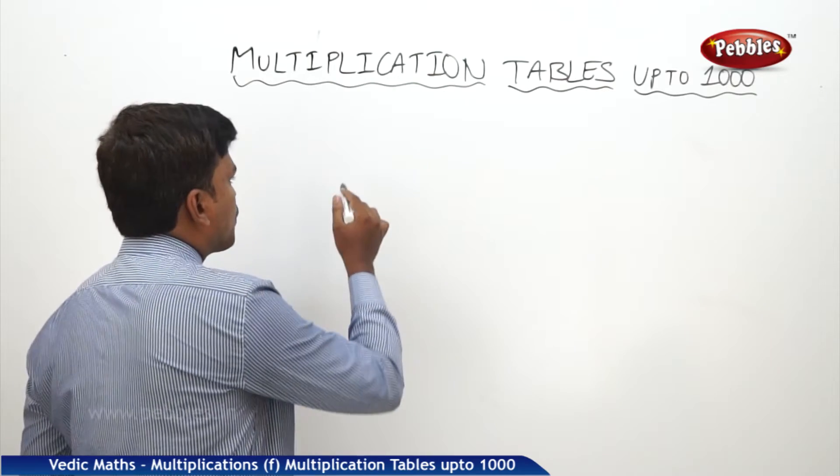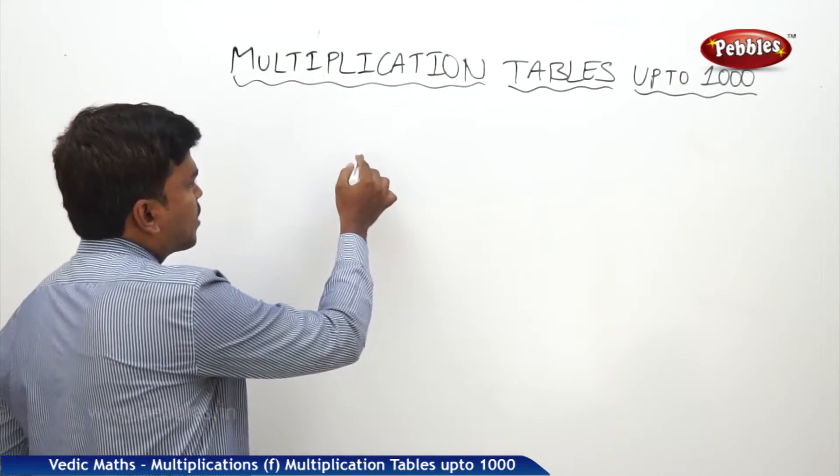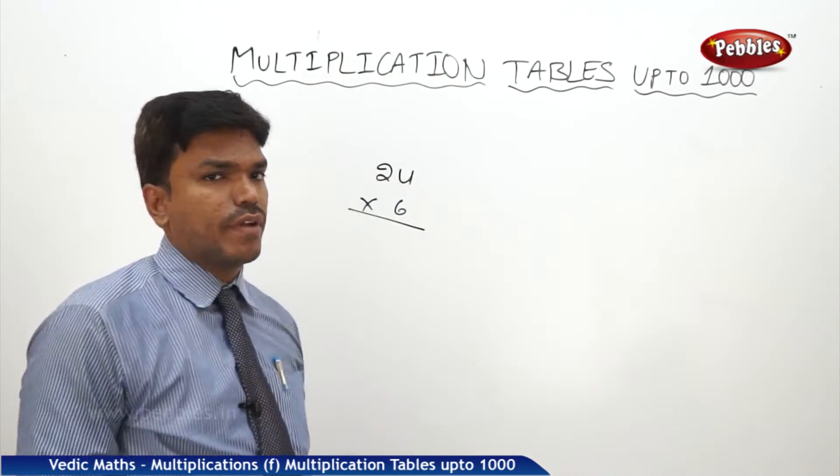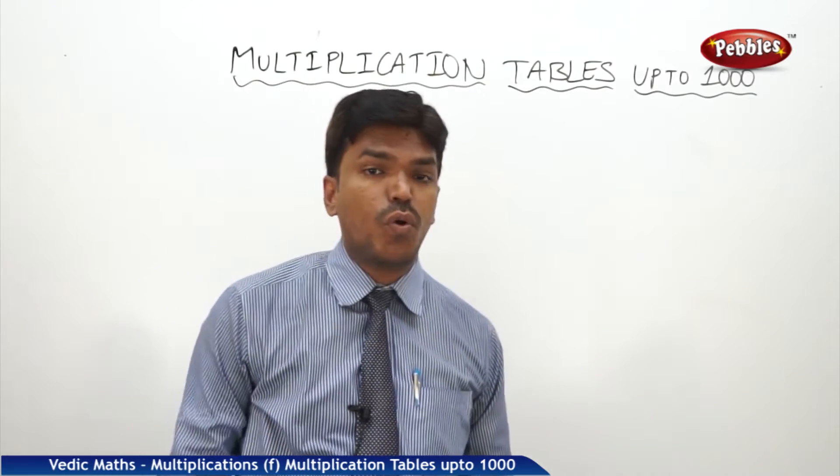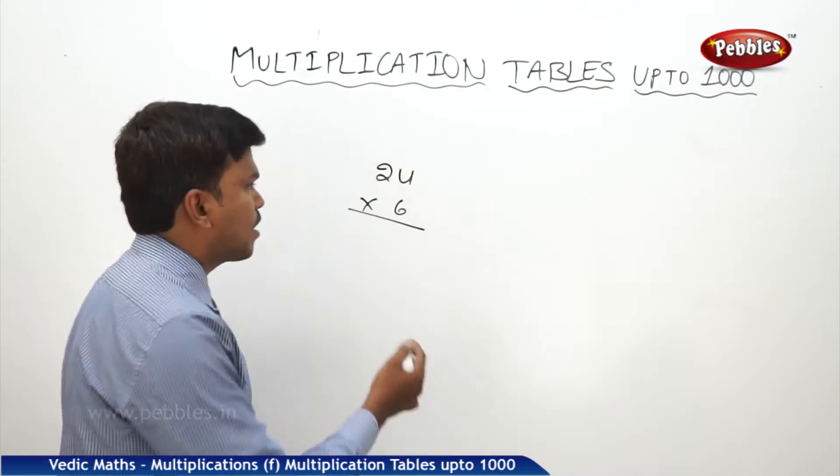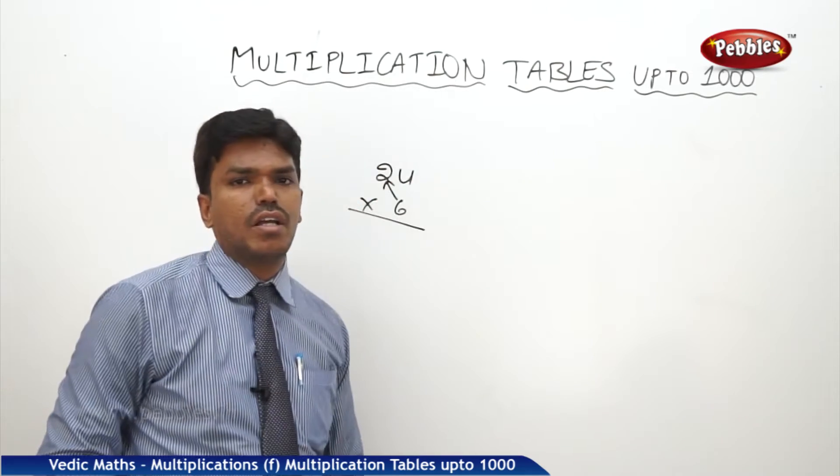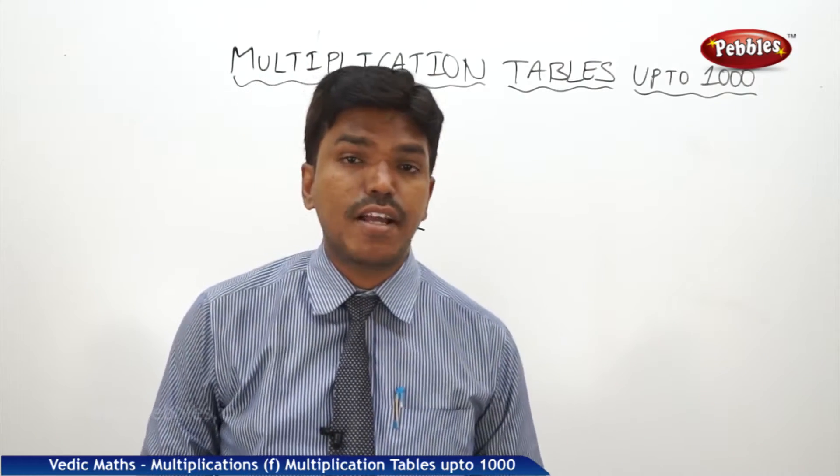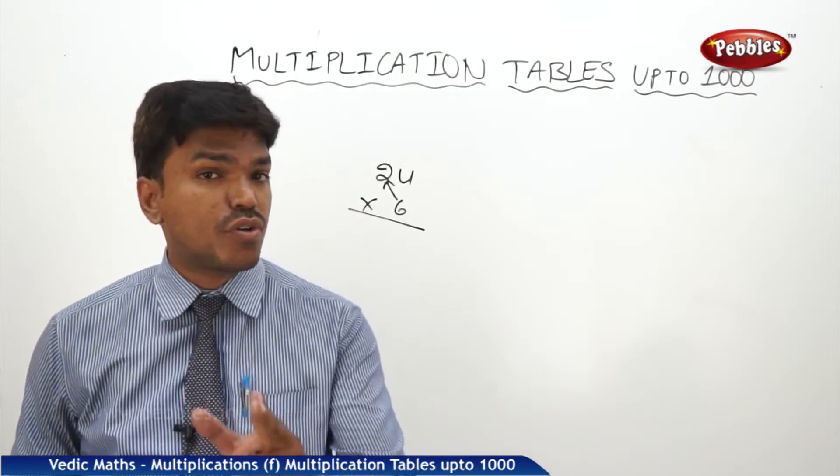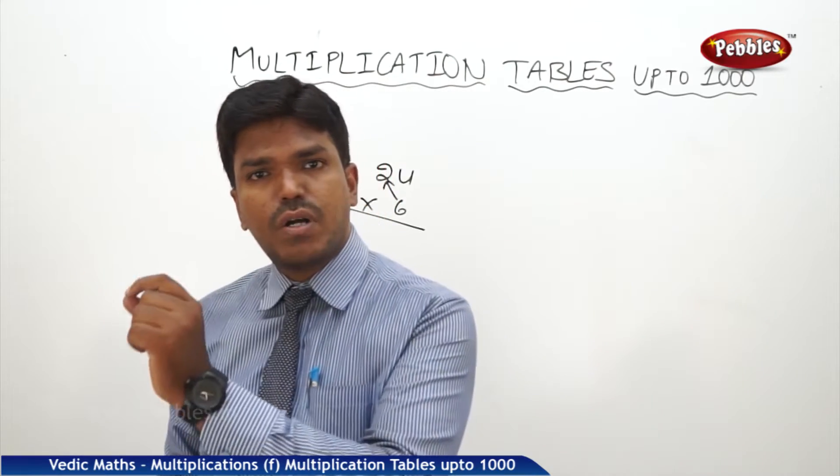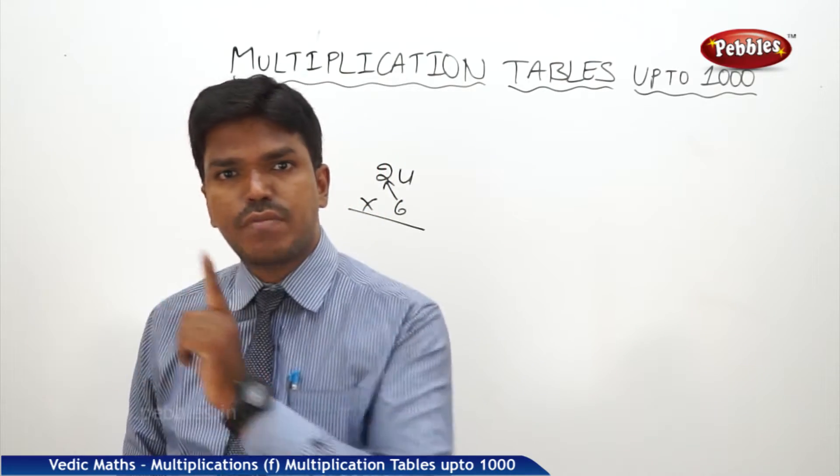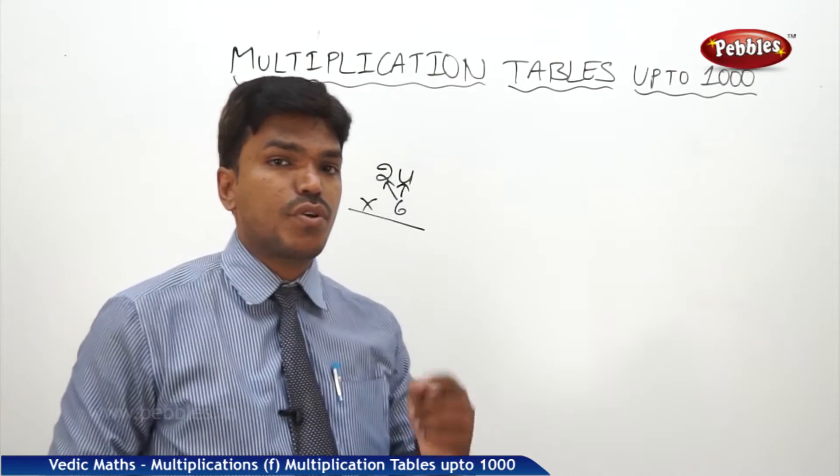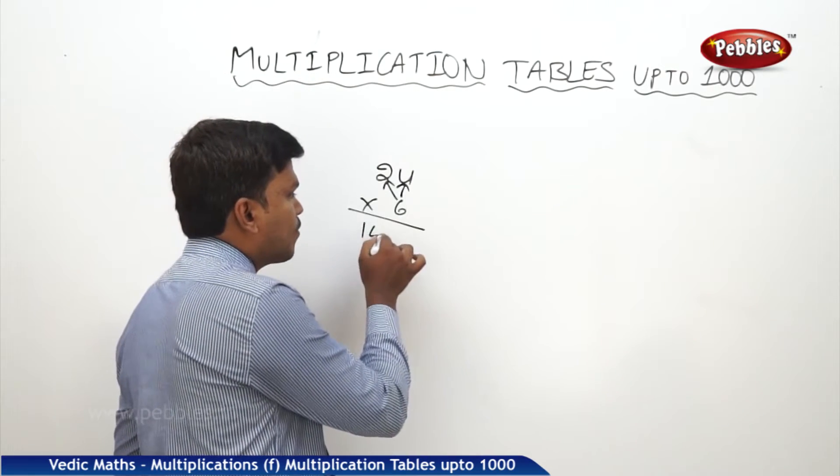First, suppose I want to multiply 24 by 6. Do you know twenty-four table? No, even I don't know. But even if you don't know twenty-four tables, you can easily calculate it in the mind. How? What is six twos? 12, but don't take it as 12, take it as 120 and keep in the mind for some time. Now what is six fours? 24. 120 plus 24, exactly it is 144.